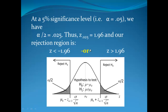We certainly have to pick a significance level when we start talking about this. So if we did a 5% significance level, when we start looking at our rejection region here in the grey, that would be our significance divided by 2 if we're doing a two-tail test. So therefore, that would give us our Z value of negative 1.96 and 1.96.